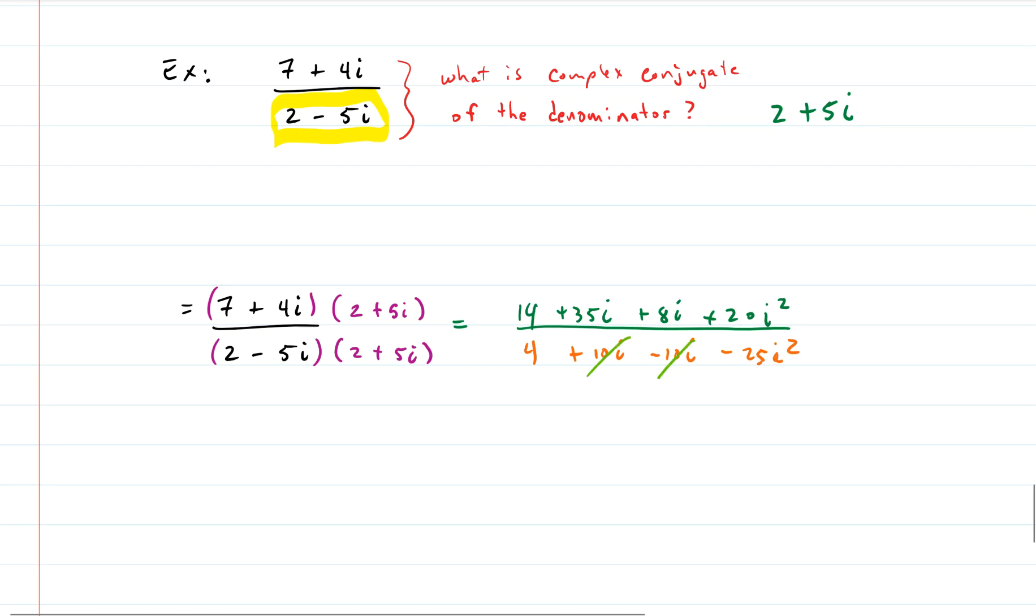So notice cancellation there. And we also need to remember what does i squared give us? That's negative 1, right? So if we kept going here, we'd have 14 plus 43i minus 20. Because that 20 times negative 1 gives us negative 20.